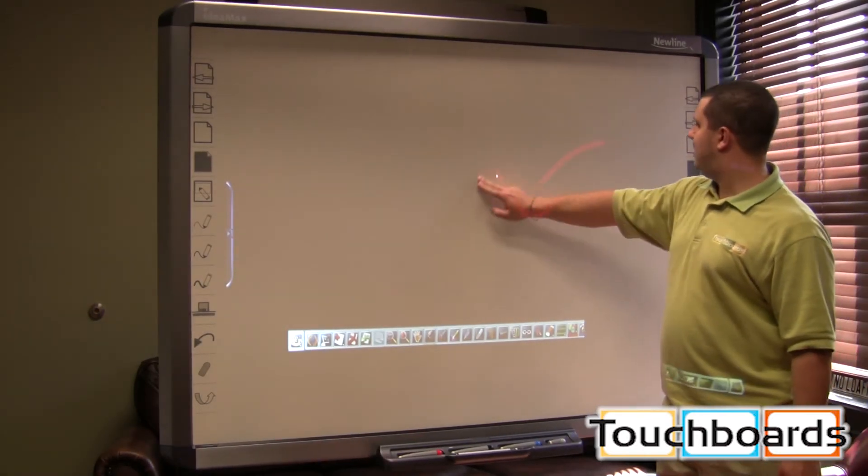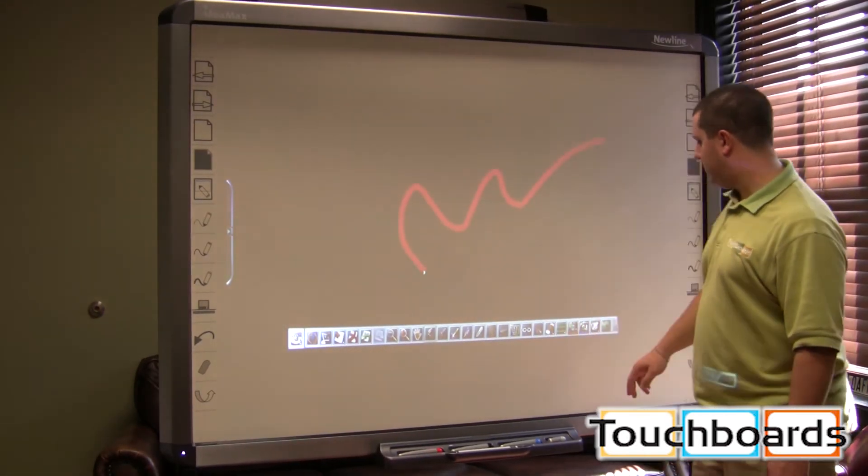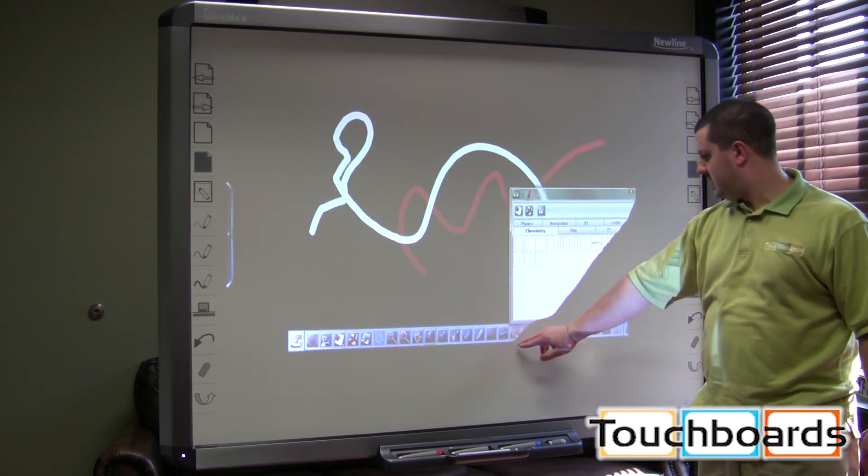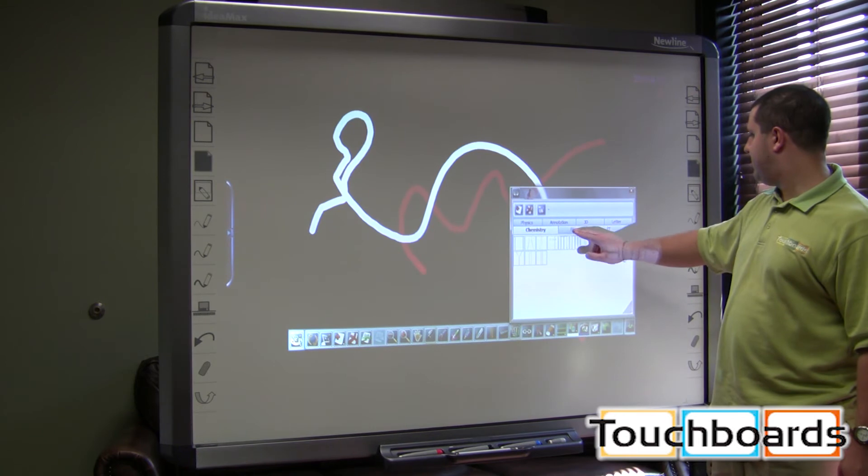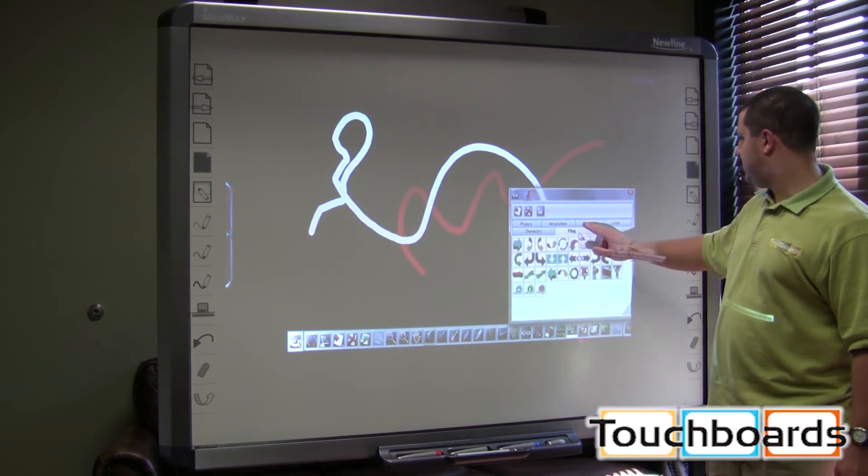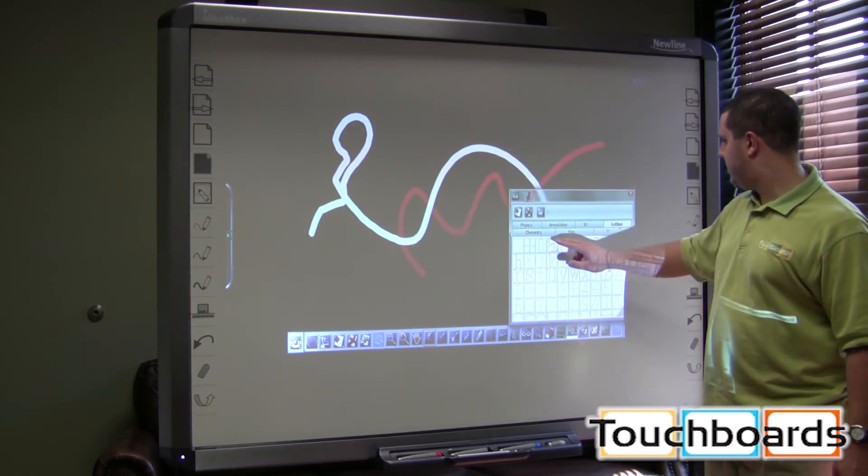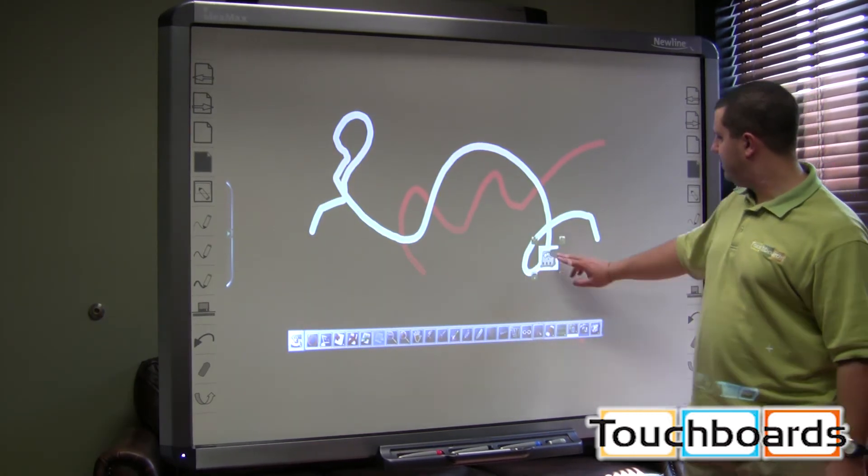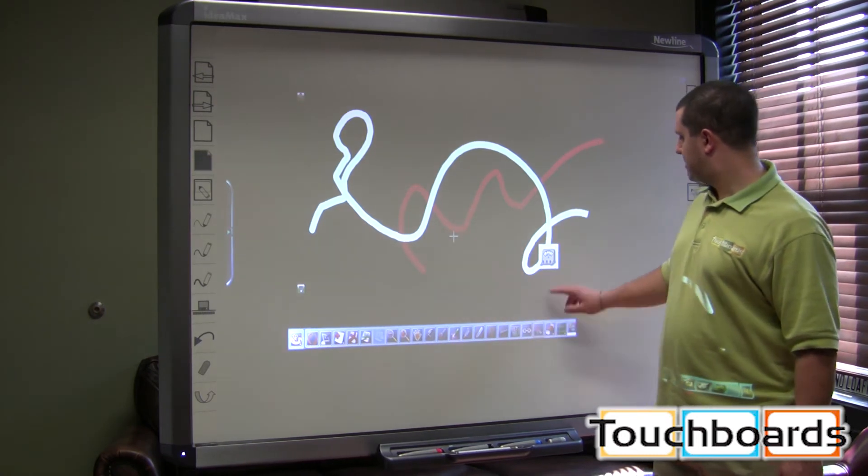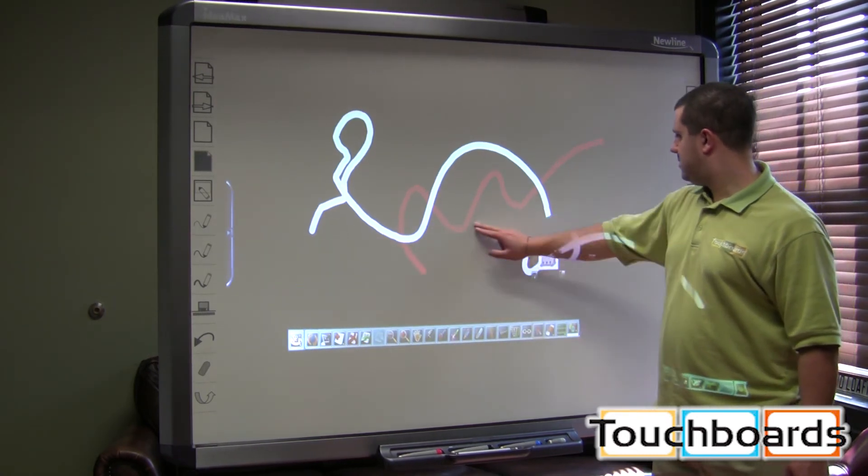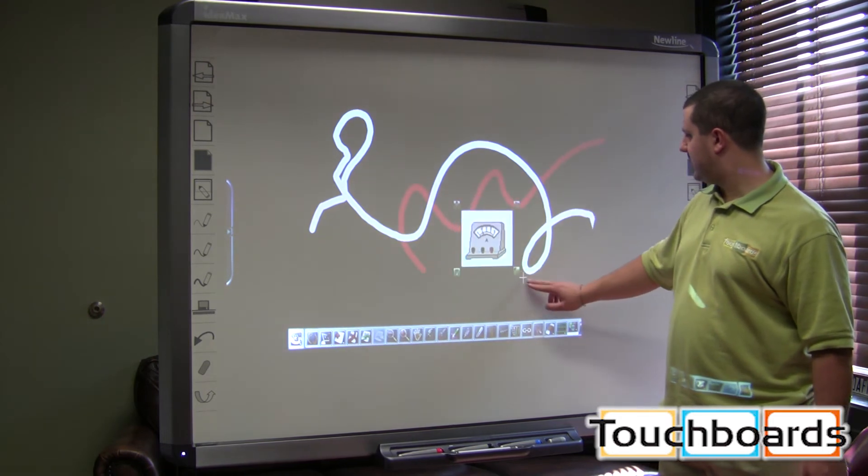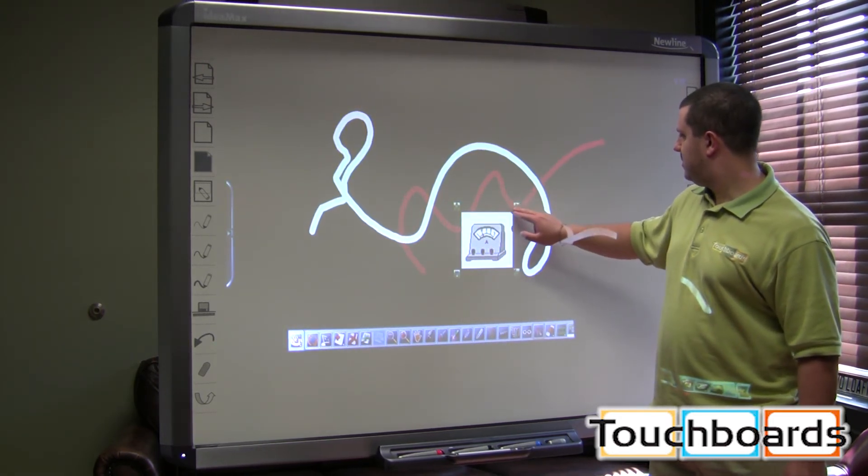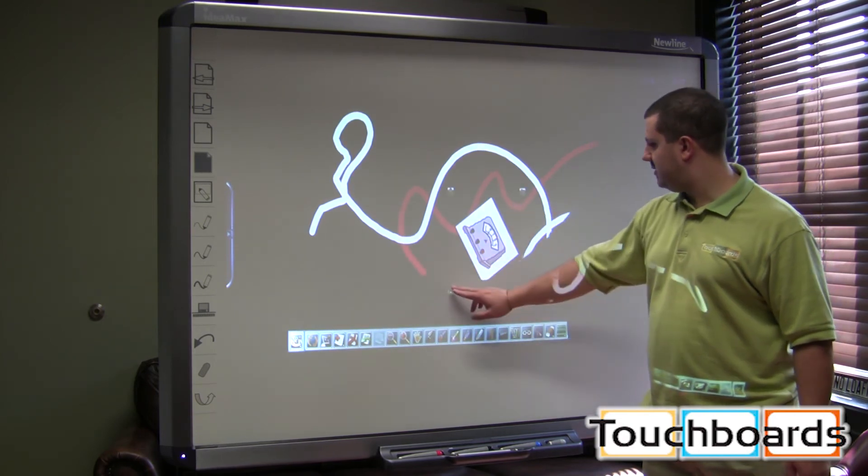Now you've got a blackboard. You can write in red, you can write in white. You can access an image library. We can pull up images that we can put in our presentation. Let's see what we've got here. We can put that right there in our notes. We can move it around, move it there. We can make it larger, make it smaller. Nice. Rotate. You can do that.